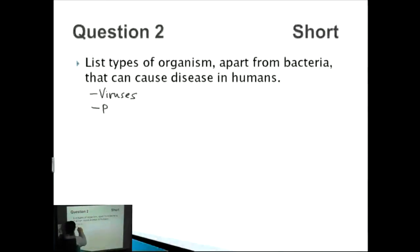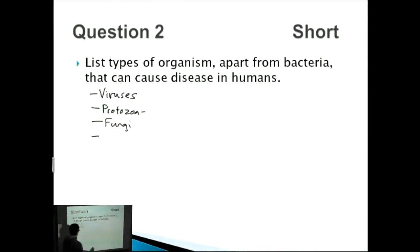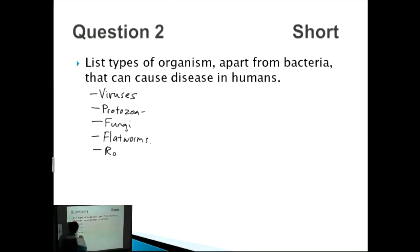Another type is protozoa — for example, the protozoa that causes leishmaniasis, which can get into your skin in South America and be quite painful. Diseases can also be caused by fungi — for example, tinea or athlete's foot. Finally, worms: both flat worms and round worms. For instance, a worm found in poorly prepared pork can invade the brain and cause epilepsy.